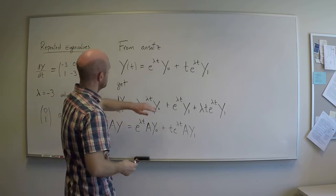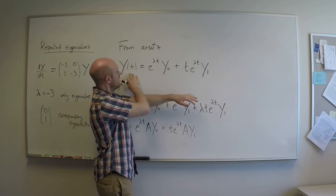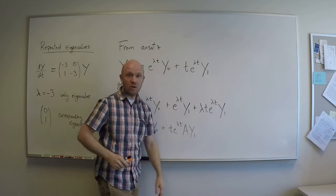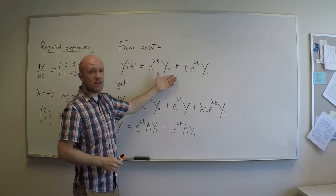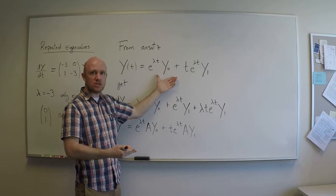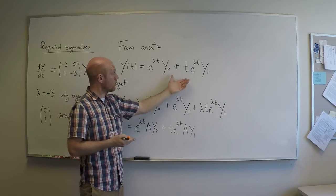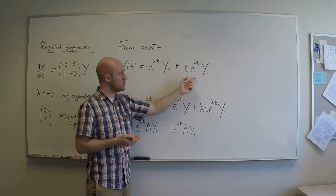So here's our new ansatz. It's y(t) has the form e^(λt)y0 plus t*e^(λt)y1. We're going to plug this ansatz into a generic equation, dy/dt = Ay, and we'll see what comes out, what's implied about lambda, y0, and y1.